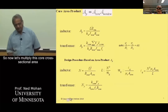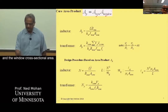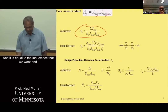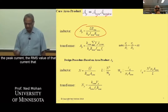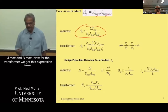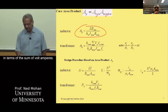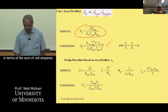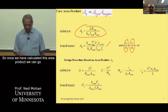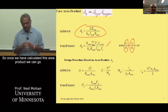Multiplying the core cross-sectional area and window cross-sectional area gives the area product. For an inductor, the area product equals L times the peak current times the RMS current, divided by k_W, J_max, and B_max. For a transformer, the area product is expressed in terms of the sum of volt-amperes across all windings, using the fact that V1/N1 equals V2/N2 from Faraday's law.